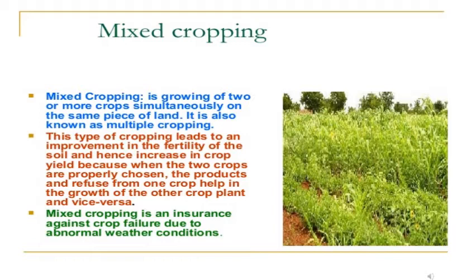The farmer wants to increase his crop yield. Even though he follows all agriculture practices properly, some innovation is needed to increase cropping. One such innovation is called mixed cropping, also called mixed cultivation. In this type of cultivation, two or more different types of crops are sown in a particular field at the same time.